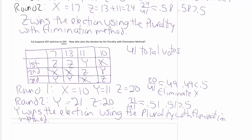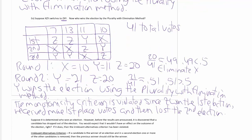Z won the first election. Z received more first place votes, but lost the second election. Does this violate the monotonicity criterion? The answer is yes. The monotonicity criterion is violated since Z won the first election, received more first place votes, and somehow lost the second election.